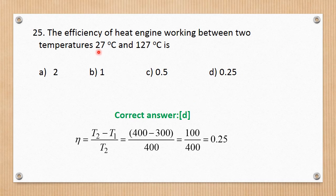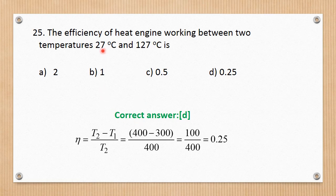Question number 25. The efficiency of a heat engine working between two temperatures 27°C and 127°C. Efficiency formula: (T2 − T1) / T2 = (400 − 300) / 400 = 100 / 400 = 0.25. The correct answer is D.